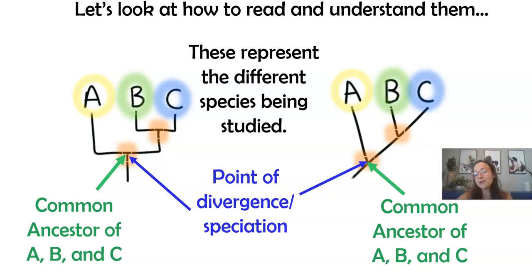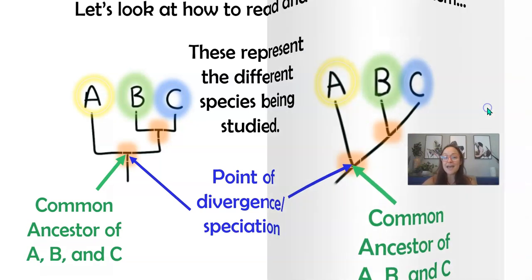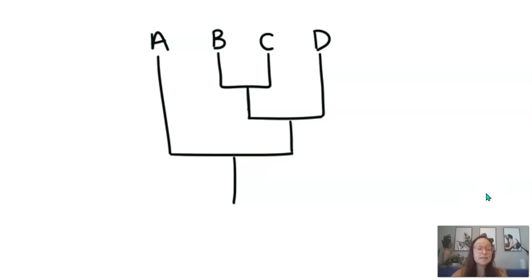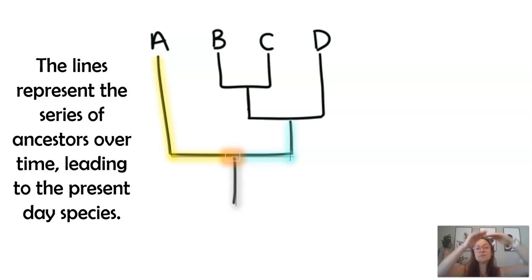Up here close to my face, that orange little square between B and C, that would represent the most recent common ancestor between B and C. Now, if we look at this phylogenetic tree right here, some things to think about and understand. One is that this gray highlighted area is going to represent a shared evolutionary history between all four species. Really, any traits that would have shown up in that gray line would be found in all four.